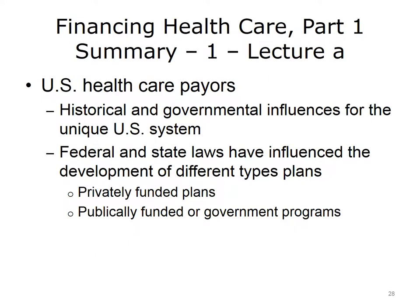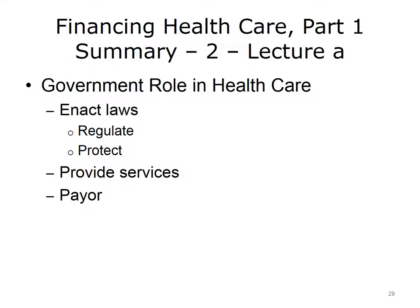This concludes Lecture A of Financing Healthcare, Part 1. In summary, the current system of health care payers in the U.S. developed as a result of historical and governmental influences. One of the main types of health insurance is the privately funded plan, which can be broken down into state-licensed insurers and self-funded, employer-sponsored plans. The other main type of health insurance comes from publicly funded or government programs. The government has three roles in health care: to pass laws that ensure fair competition and protect the public, to provide health care services, and to pay for services.